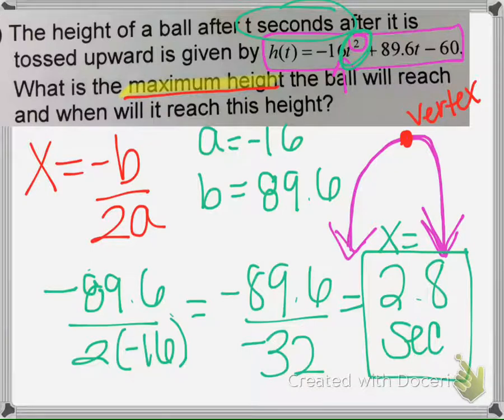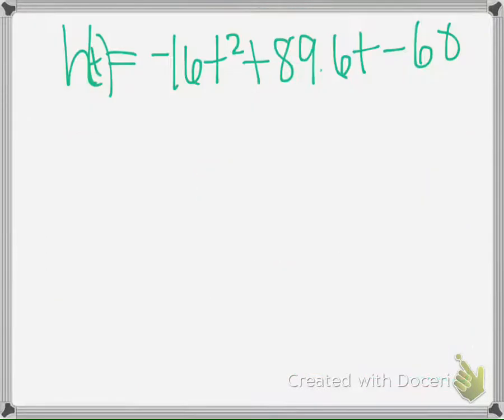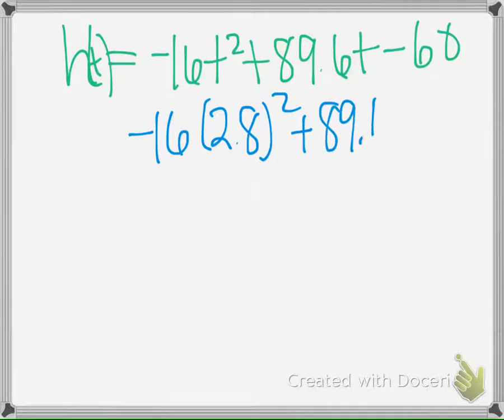Now we want to know what the maximum height is, so we'll take 2.8 and plug it back into our equation. We'll replace t with 2.8 and evaluate.